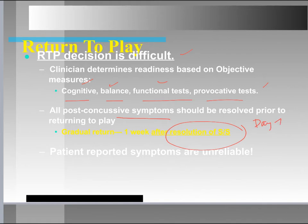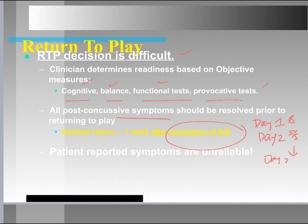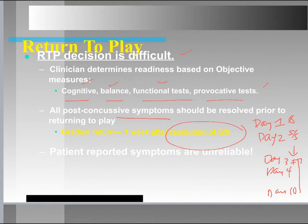For example: day one, the patient reports zero symptoms — we let them practice. Day two they have symptoms — the seven-day symptom-free period starts all over. Day three they're symptomless, day four they're symptomless again — that would be day three plus seven more days before they can return. The seven-day clock resets anytime they report symptoms. Importantly, don't tell your patients about this clock or they may fake being symptom-free for seven consecutive days.